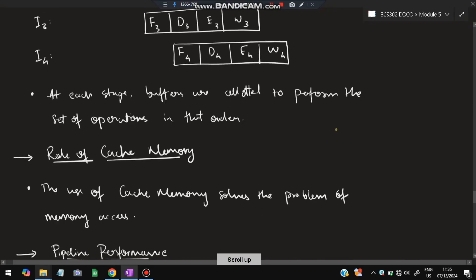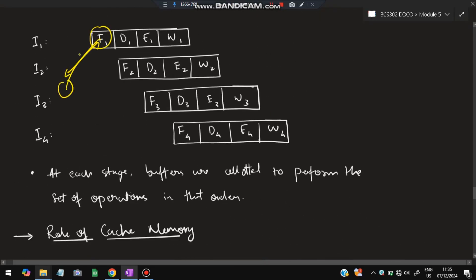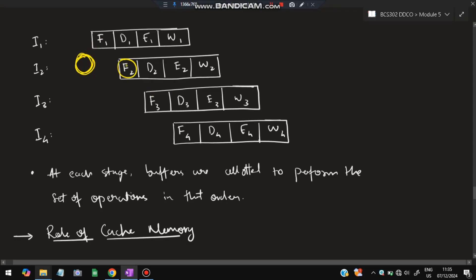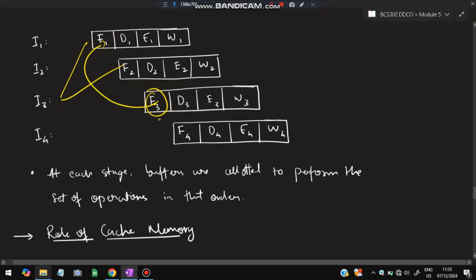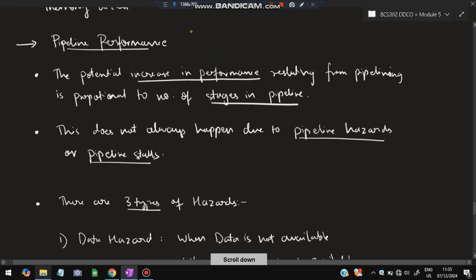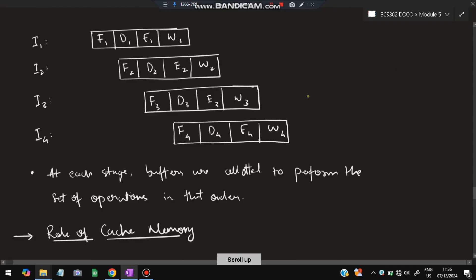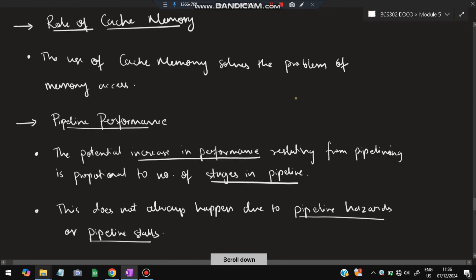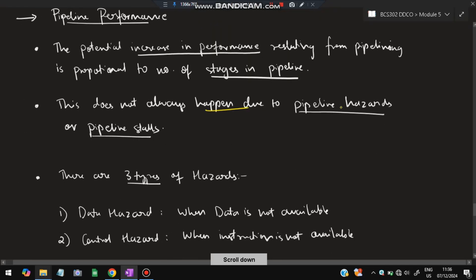The role of cache memory: the fetch operation from main memory takes a lot of time. Using a cache in between allows recently fetched data to be accessed very quickly. This works best when the required data was already fetched by a previous instruction. Most of the time instructions require recently fetched data, so cache significantly increases memory access speed. Pipeline performance increases proportionally to the number of pipeline stages.